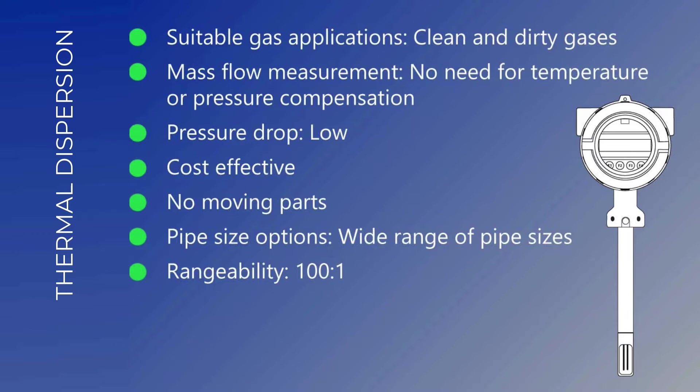Thermal mass flow meters utilize the thermal sensing principle by using a constant temperature differential to measure the mass flow rate of air and gases. Thermal dispersion flow meters are suitable for gas applications and work with both clean and dirty gases. They provide mass flow measurement with no need for temperature or pressure compensation, offer a low pressure drop, are cost effective, have no moving parts, come in a wide range of pipe sizes, and have a rangeability of 100 to 1.